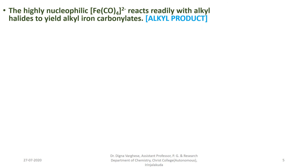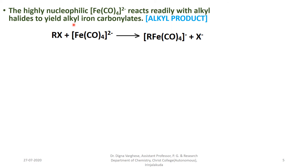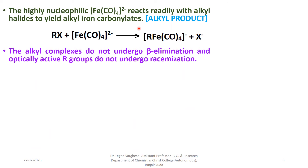The highly nucleophilic Fe(CO)4(2-) reacts readily with alkyl halides to yield alkyl iron carbonylates. Collman's reagent — tetracarbonyl ferrate(2-) ion — is a nucleophile that reacts with electrophiles, yielding the alkyl product. The alkyl complexes do not undergo beta-elimination, and optically active R groups do not undergo racemization, so the alkyl product is stable.